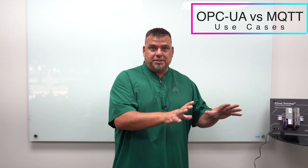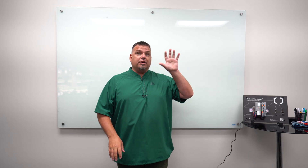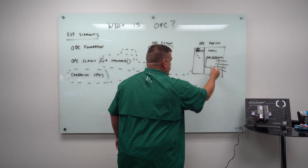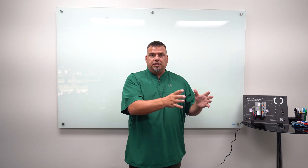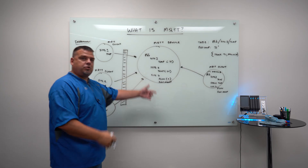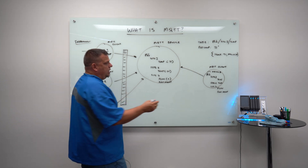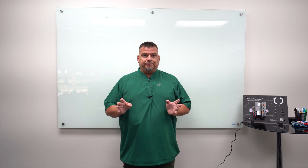Then we're going to do OPC UA specifically versus MQTT use cases — where it's appropriate in an Industry 4.0 implementation to use OPC UA, what its strengths are, and in what applications you'd use MQTT with Sparkplug B and how they interoperate with one another.